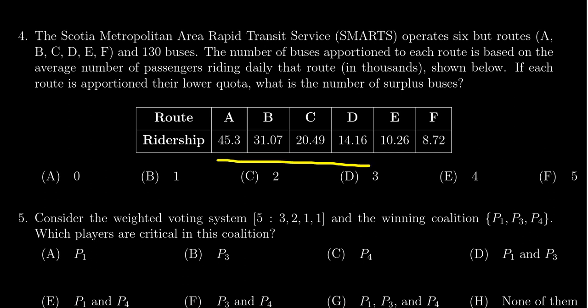We have six states and their respective populations given here. This number here represents thousands of people, so that would be 45.3 thousand. And we have 130 seats that have to be apportioned between them, buses for specific routes to be more precise. So we have 130 buses that we have to distribute amongst these things.